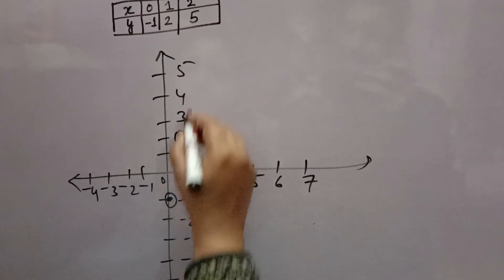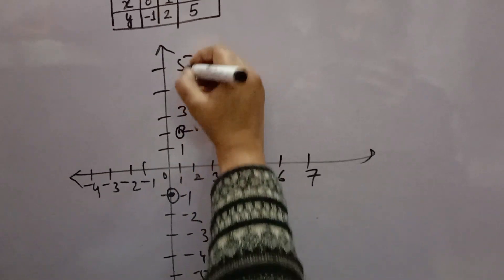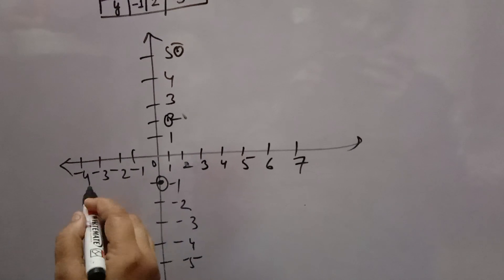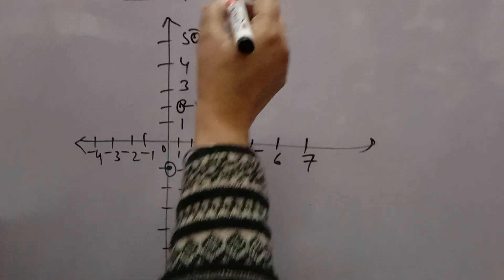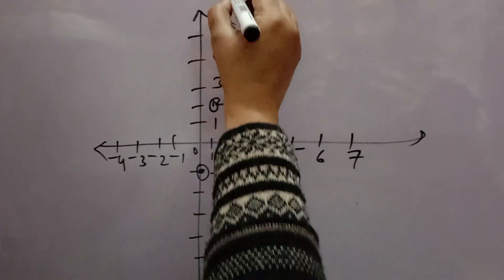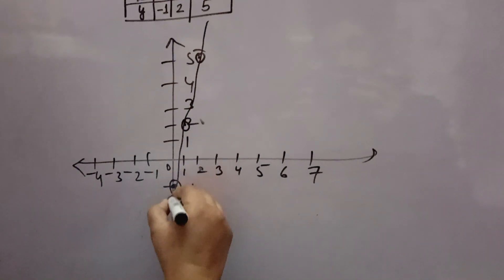Then x is 2, y is 5, so one point will come here. Now if y will be 0, x will be something in point, so no need to take that. You can join this with the help of scale.